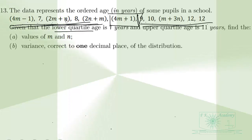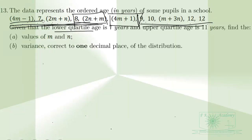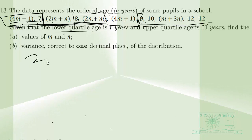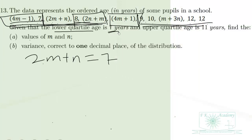We have one, two, three, four, five values in the lower half. The median of the lower half is the lower quartile, which is 2M + N. So 2M + N is equal to 7, according to the question.